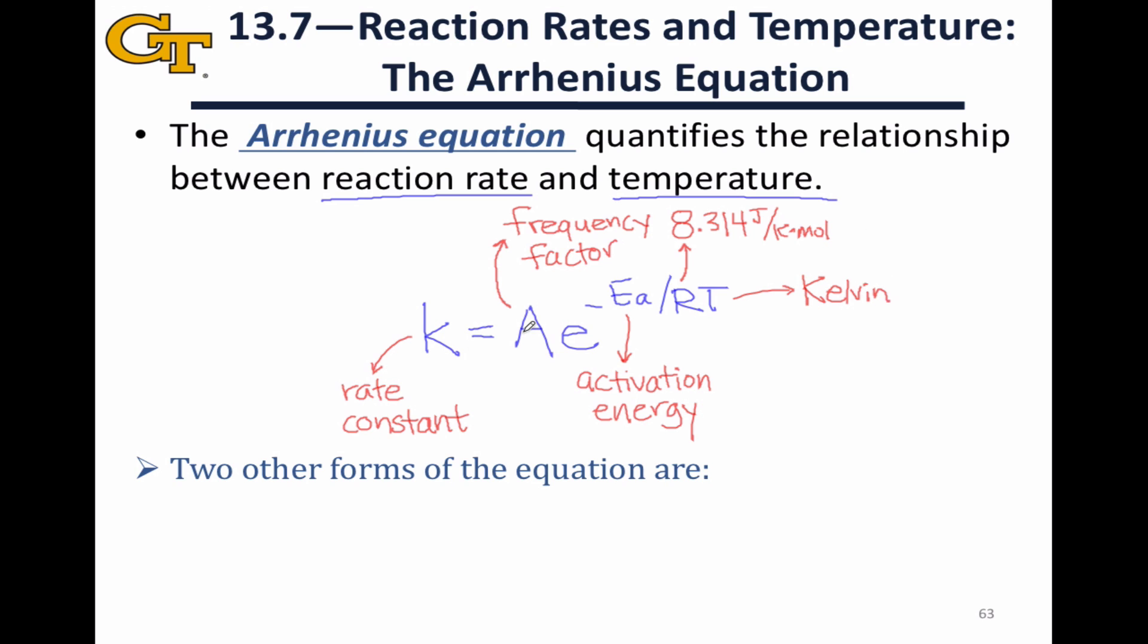Let's return briefly to this frequency factor, A. What exactly does this represent? If you think about A, A is the rate constant when this entire second factor, e to the negative Ea divided by RT, ends up being equal to 1. And when is that the case? This e raised to a power will be equal to 1 when the power itself is equal to 0.